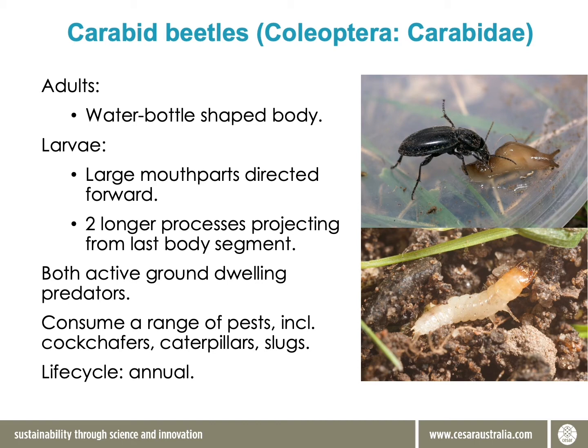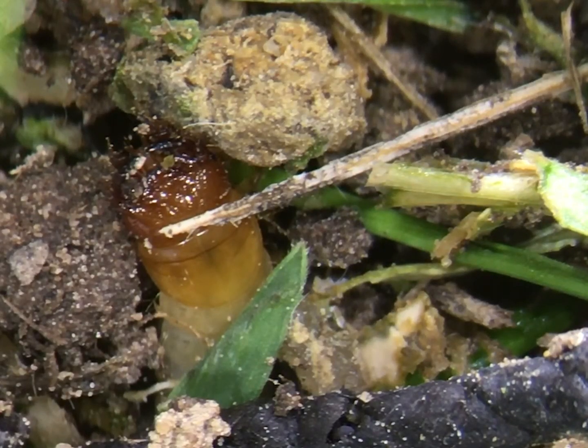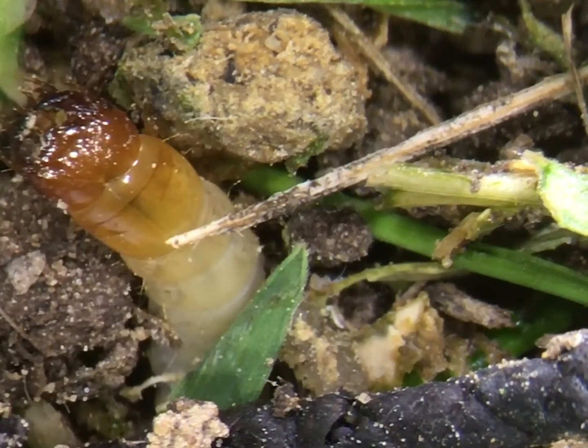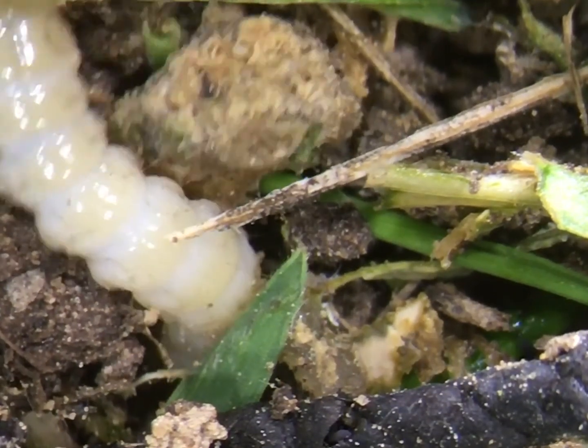It would be very easy to mistake a carabid beetle larva for something like a true wireworm, which is a plant pest species — and it's important to make sure you know the difference in the paddock. Carabids spend a lot of their time on the soil surface, as opposed to the ladybird beetle which forages further up in the canopy.